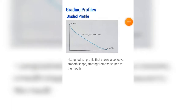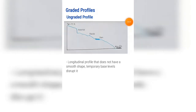A graded profile is a longitudinal profile that shows a concave smooth shape starting from the source and ending at the mouth. This is normally the shape that the river aims to achieve. An ungraded profile is a longitudinal profile that does not have a smooth shape.